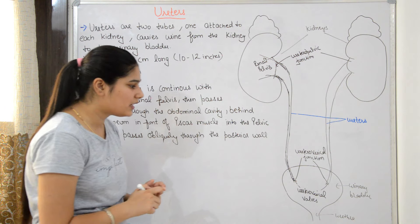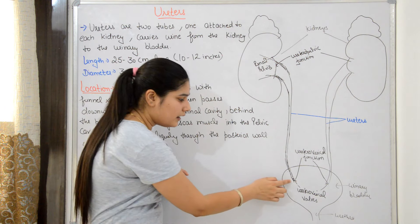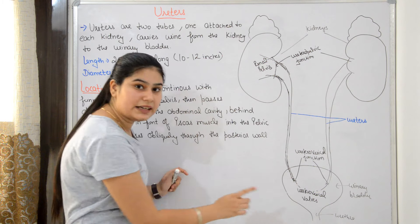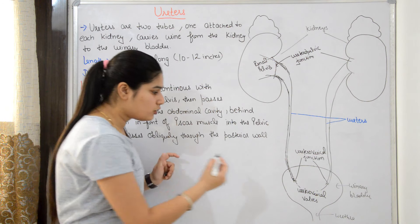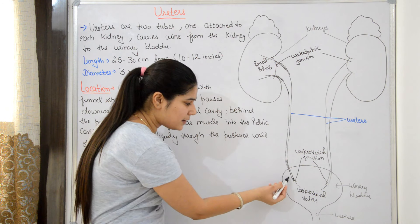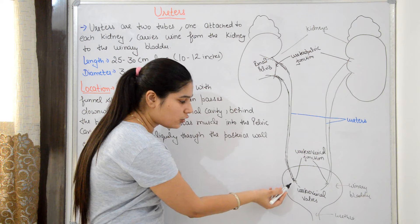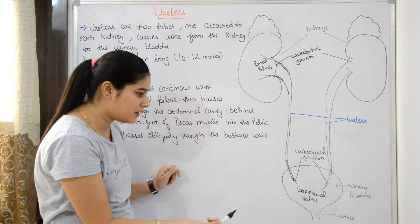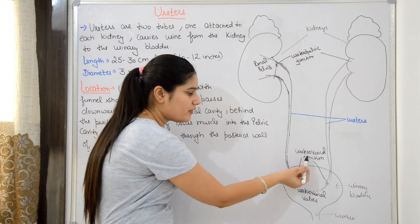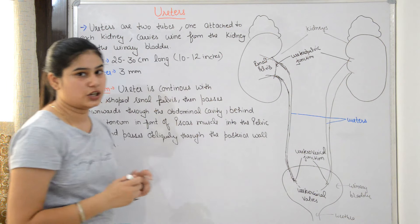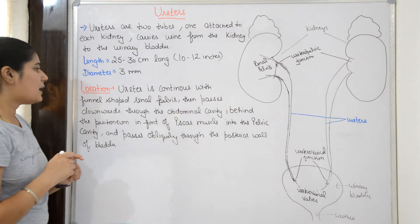Where the ureter enters the urinary bladder, there is another junction called the ureterovesical junction.